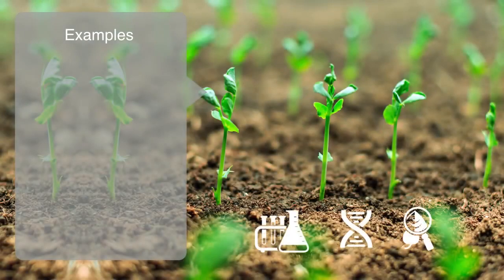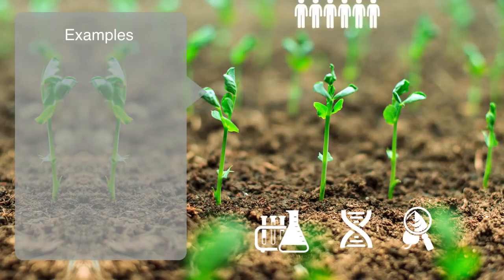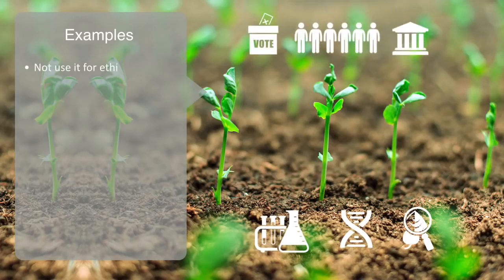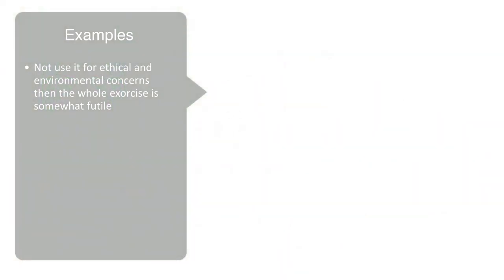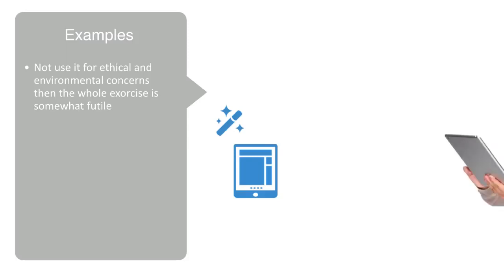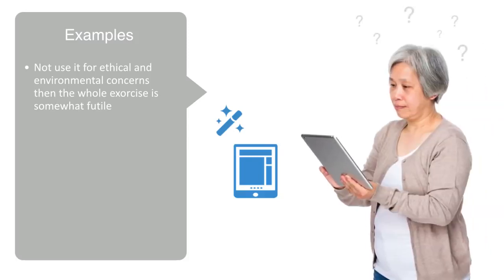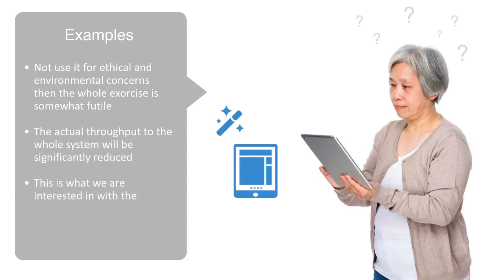To take some examples of this, we could think about the current state of genetic engineering. Scientists and engineers may spend decades researching and developing the technologies, but if society decides it will not adopt it for ethical and environmental concerns, then the whole exercise is somewhat futile, which is exactly what has happened in the European Union. Or to take another example, web developers in Silicon Valley may build software with all sorts of bells and whistles expecting everyone to be tech-savvy, but if a large percentage of these users are in fact elderly and unaccustomed to the interface, then the actual throughput to the whole system will be significantly reduced. And this is what we're interested in with socio-technical systems — the actual throughput to the whole system, not just its technical dimension.